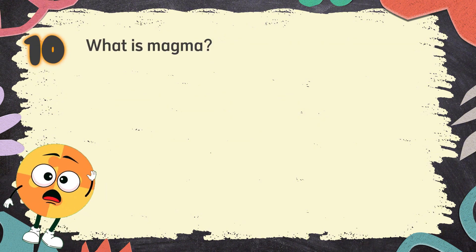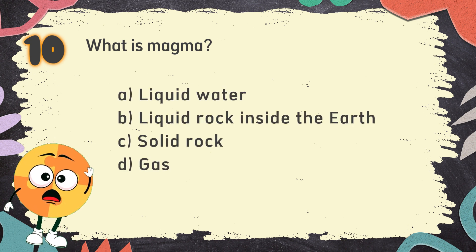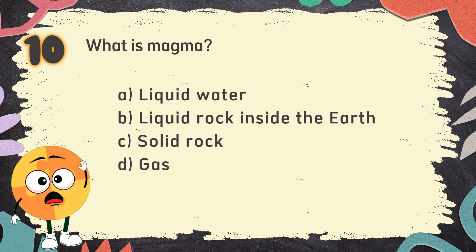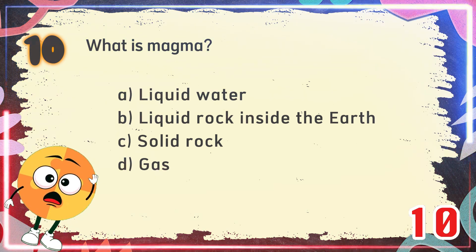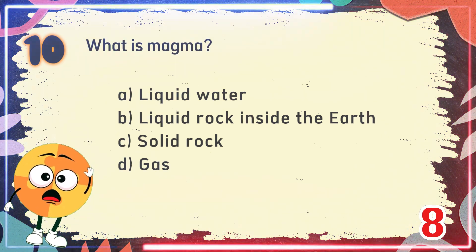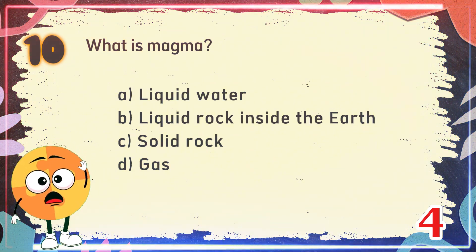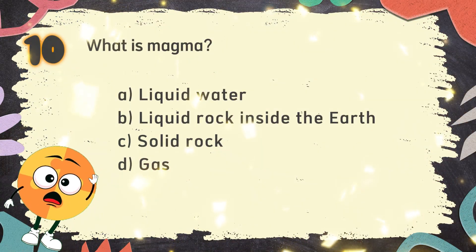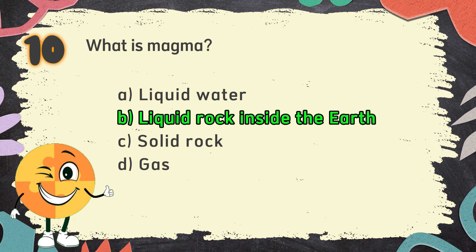Number 10. What is magma? The choices are: A. Liquid water, B. Liquid rock inside the earth, C. Solid rock, D. Gas. The correct answer is B. Liquid rock inside the earth.